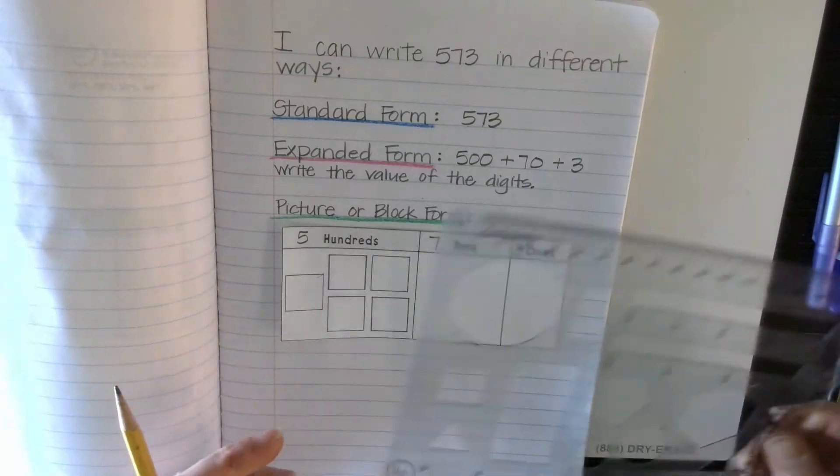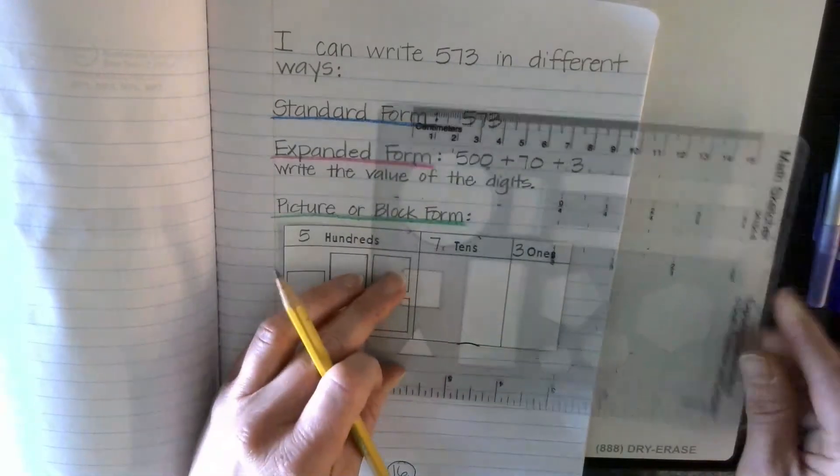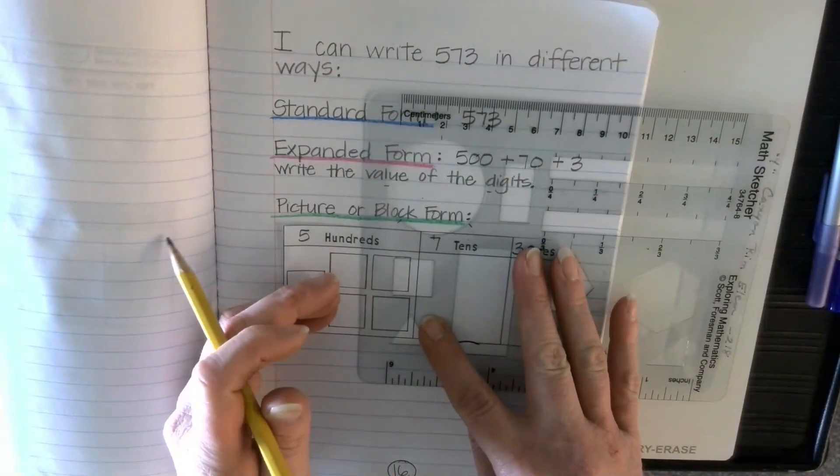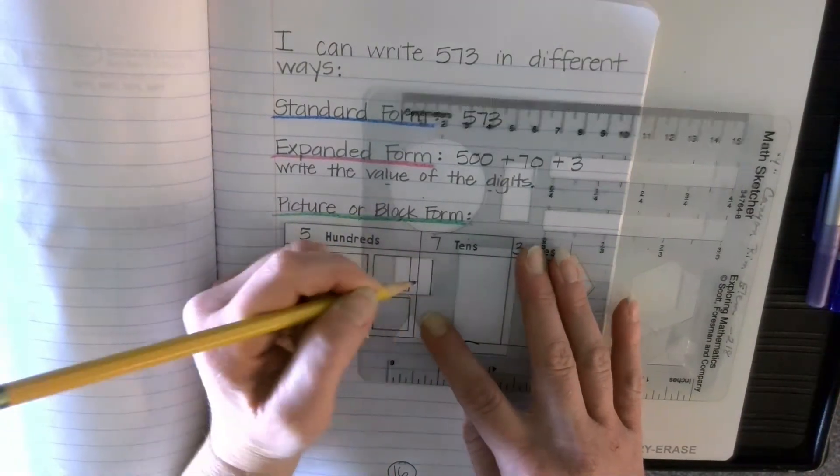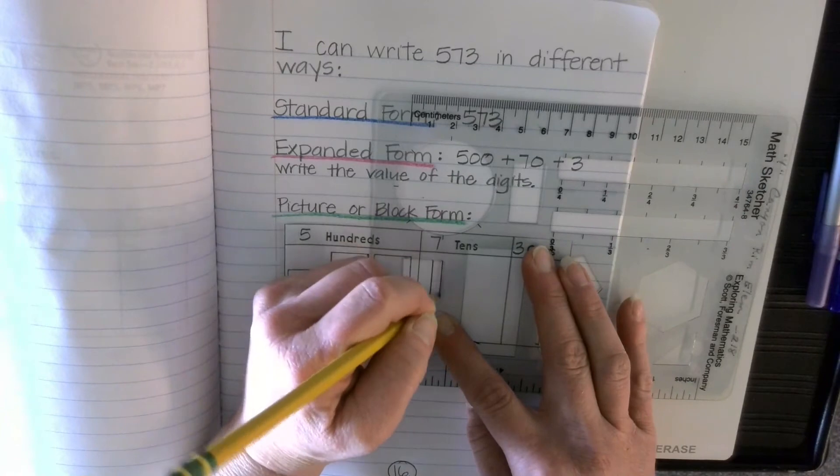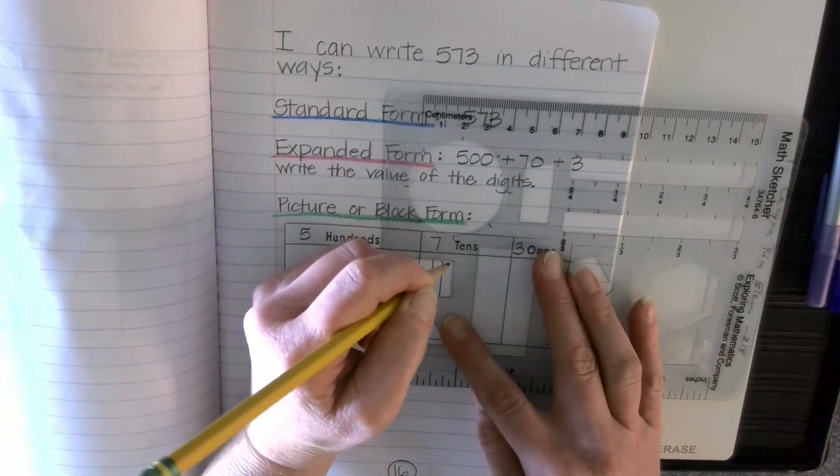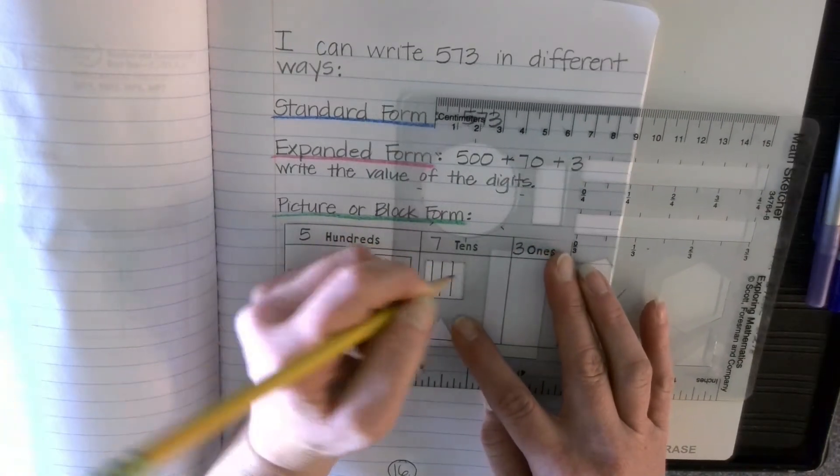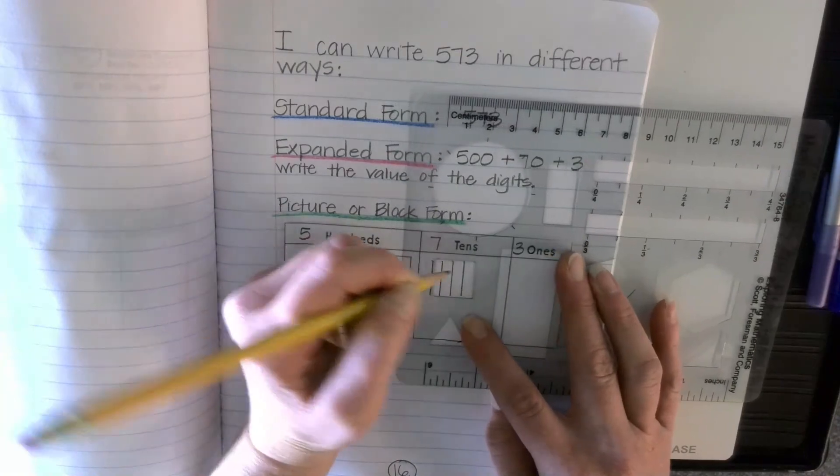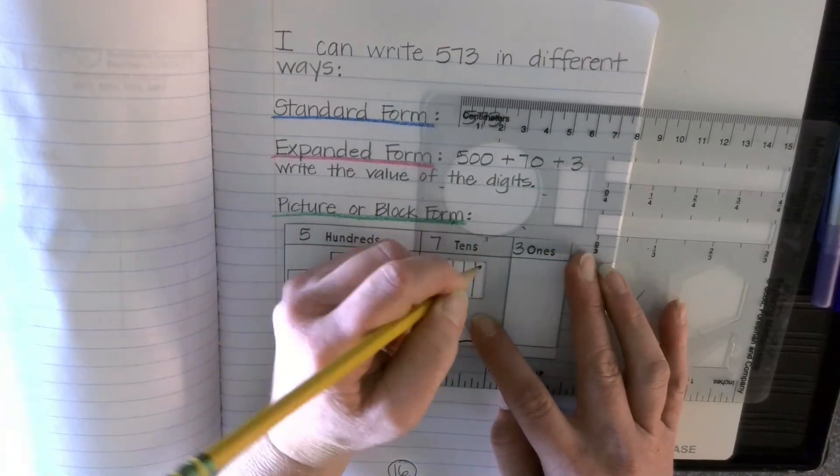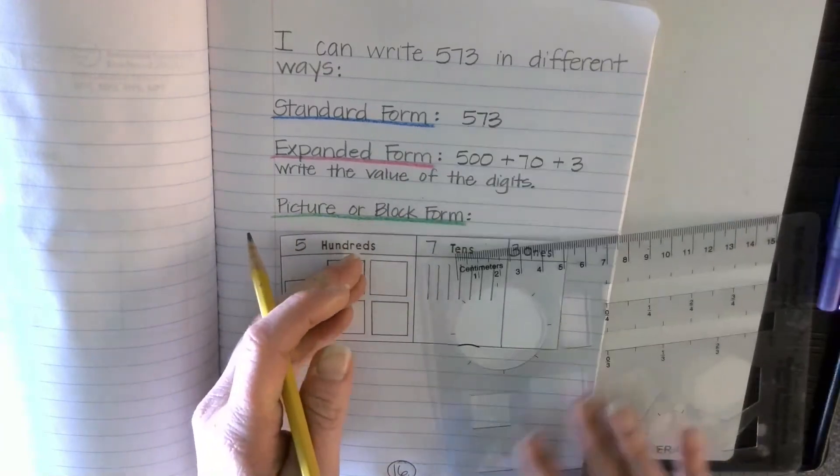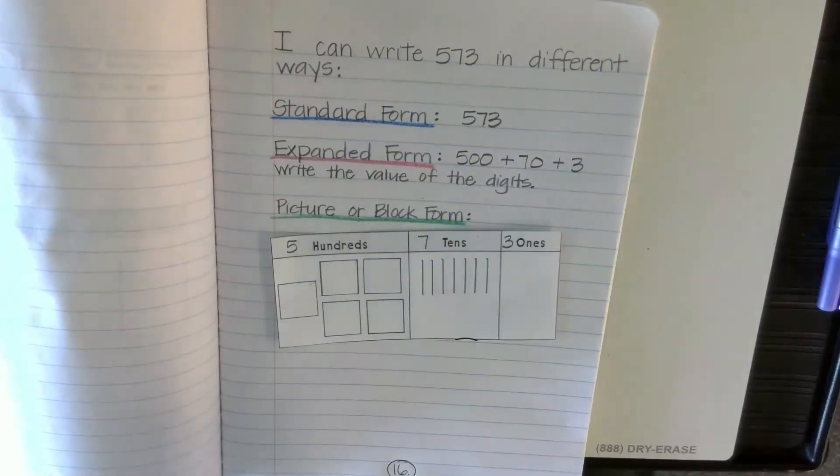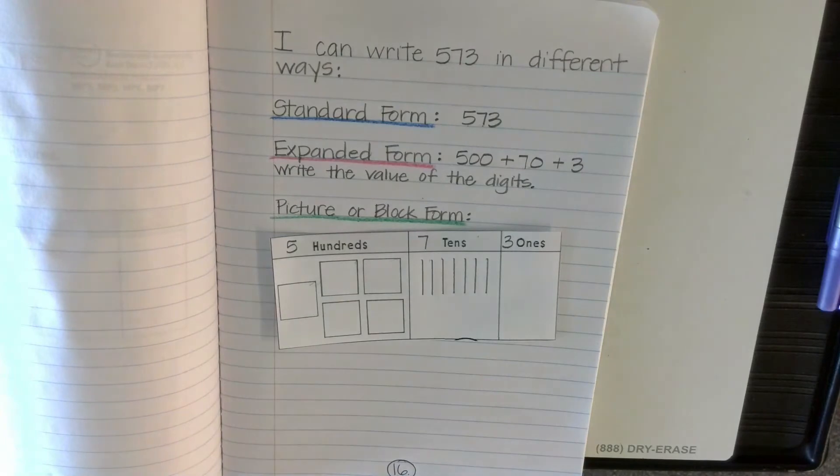And then my 7 tens, watch this, what I'm going to do here, I'm just going to use one side of my stencil and I'm going to go one, two, three, four, five, six, seven.